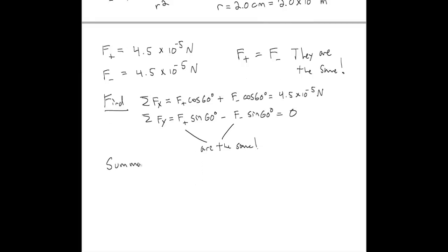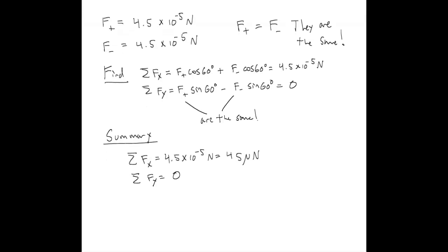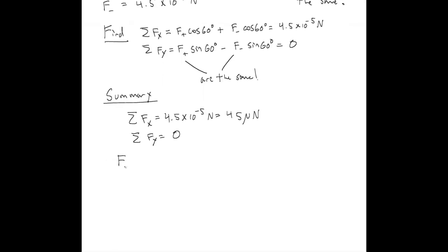To summarize: the net force in the X direction is 4.5 × 10⁻⁵ newtons, or equivalently 45 micronewtons. There is no force in the Y direction. We can also write the net force vector as 45 micronewtons pointing to the right, and we're done.